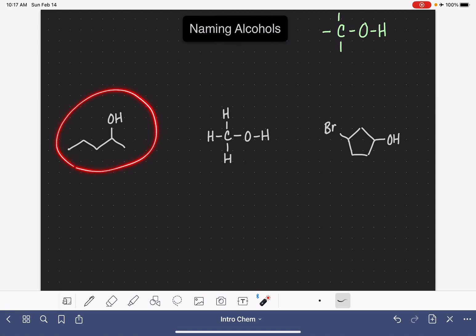Let's take a look at our first example. First job always is to find the longest continuous chain of carbon atoms. This molecule has a chain of five carbon atoms. And we want to number that carbon chain starting at the end that is closest to the alcohol group, the OH.